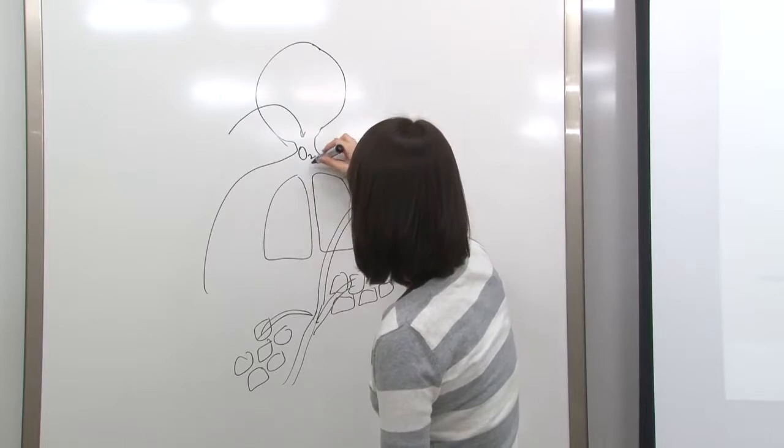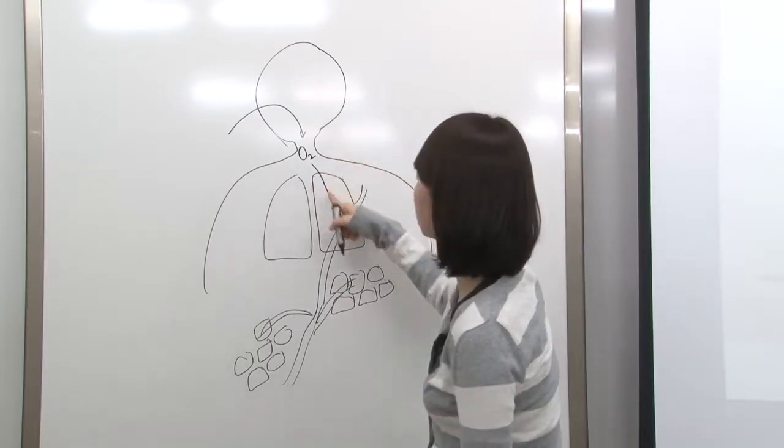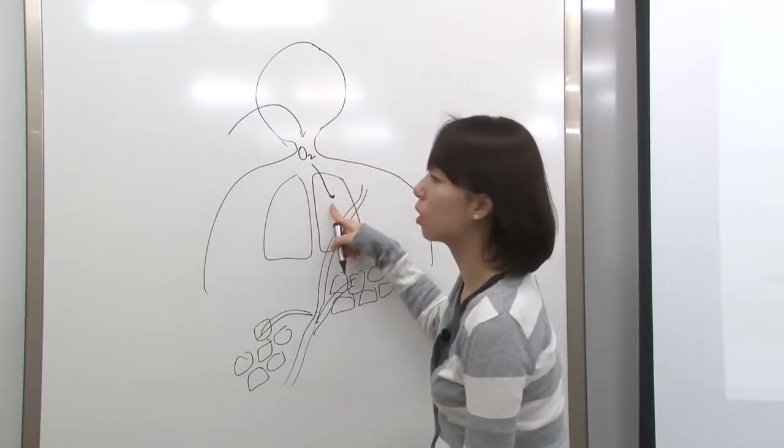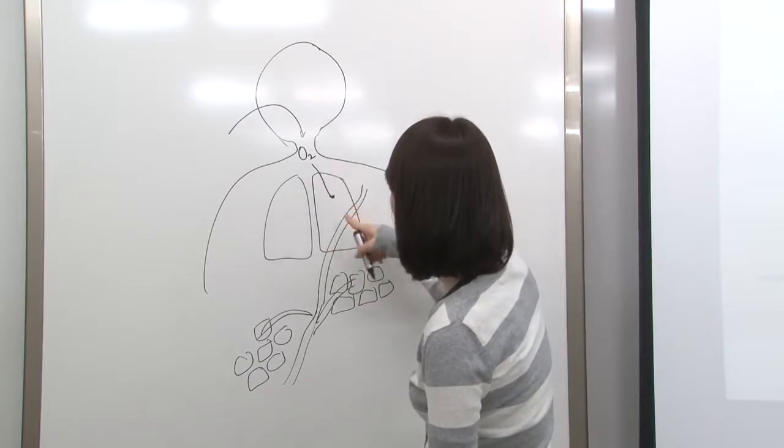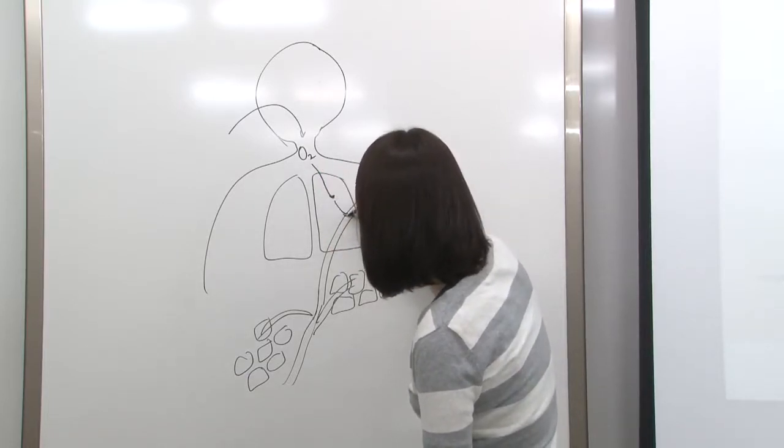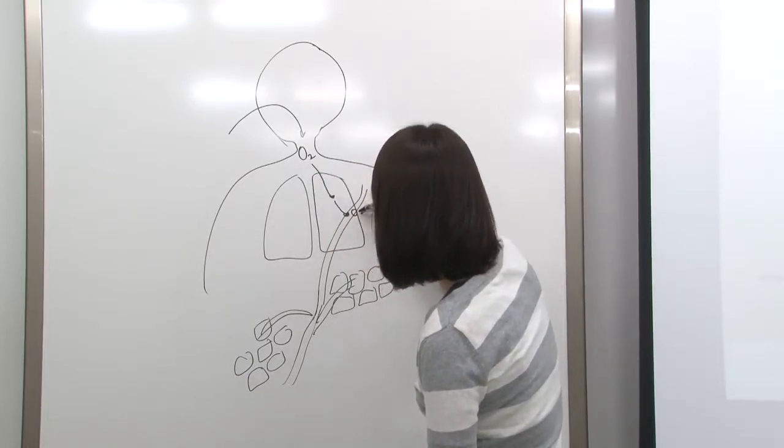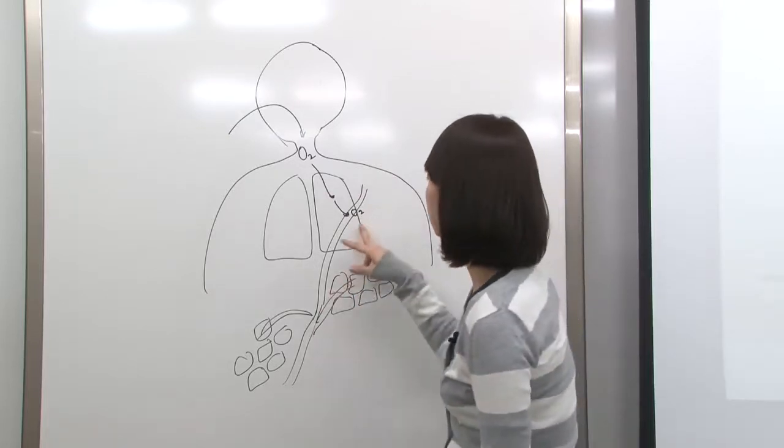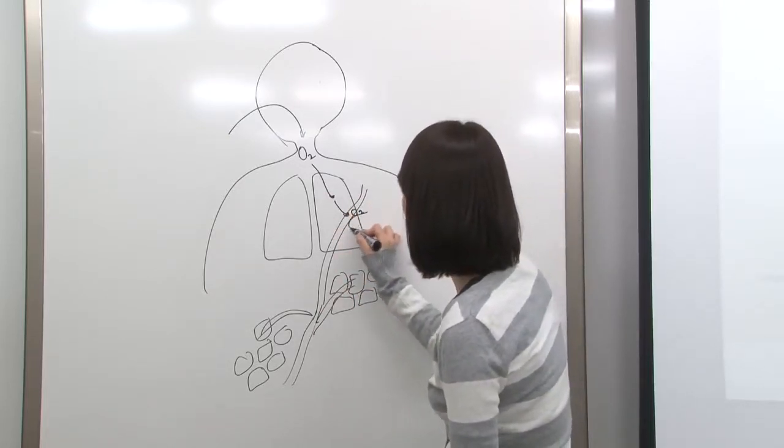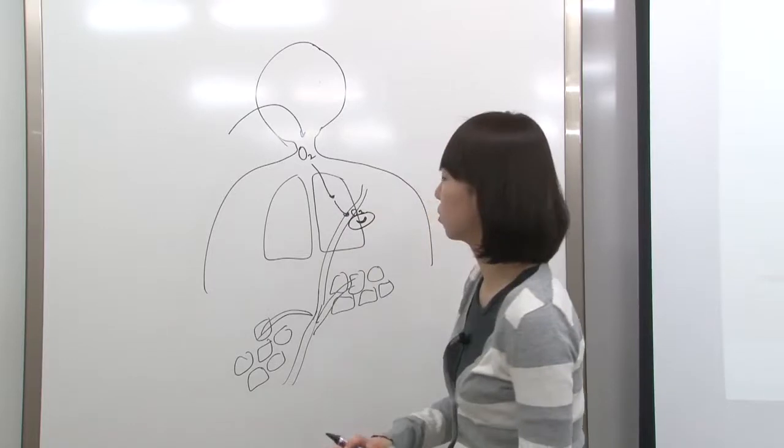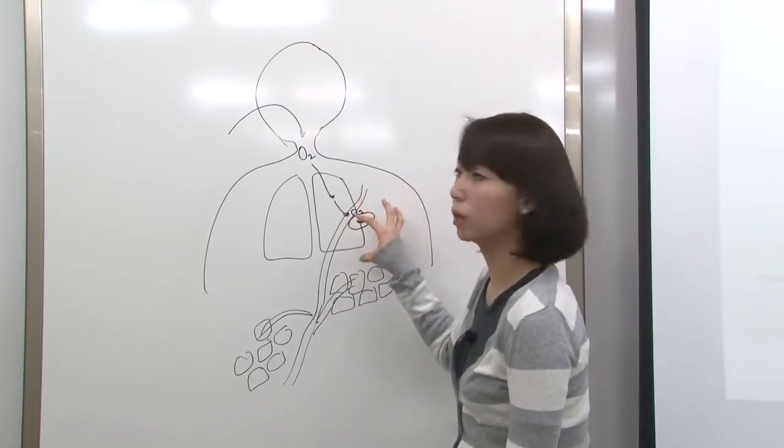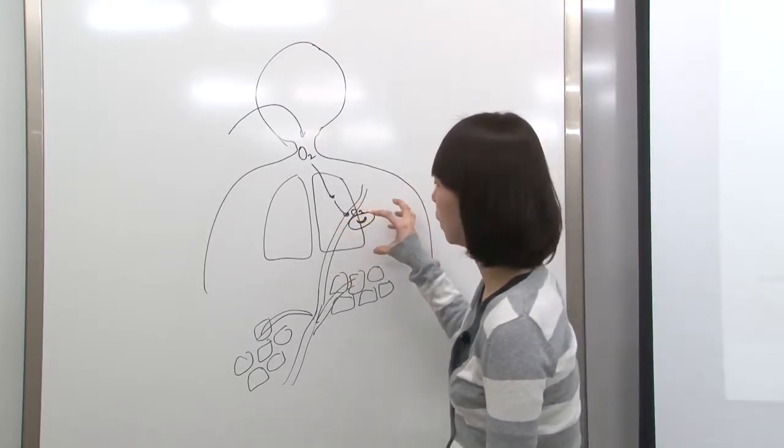O2 gets exchanged here in the lung and actually goes to the bloodstream. O2 gets captured by the red blood cell, so blood cells are actually the carrier of the O2 molecules.